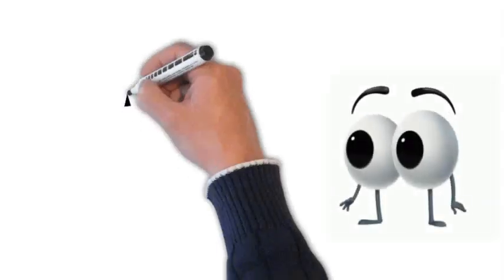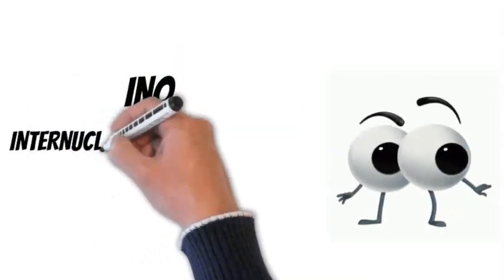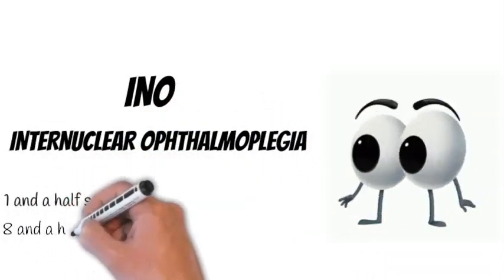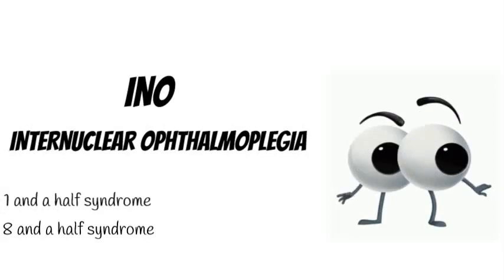In this video we shall talk about internuclear ophthalmoplegia together with one and a half syndrome and eight and a half syndrome. So let's start with the basics of horizontal eye movement.